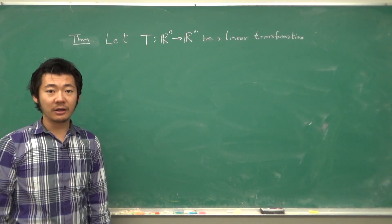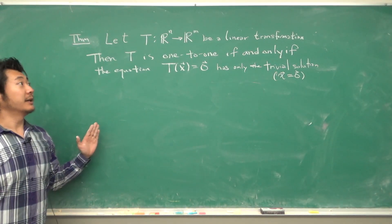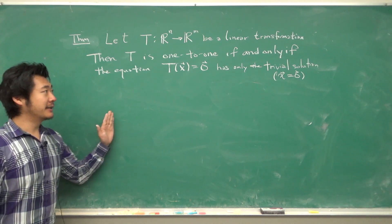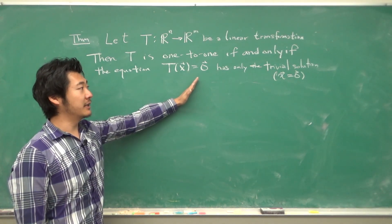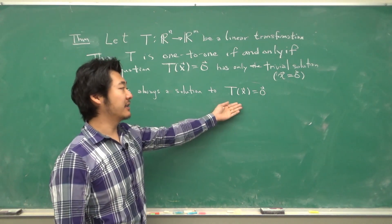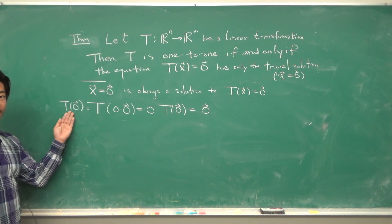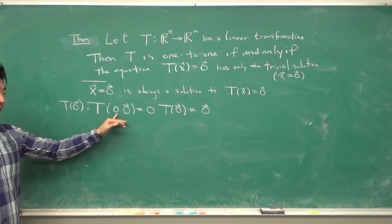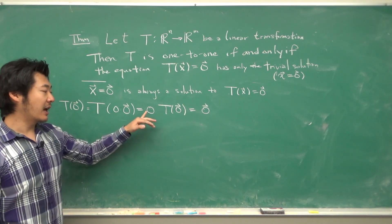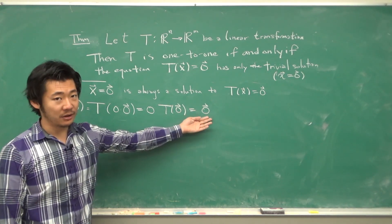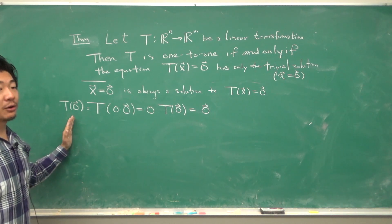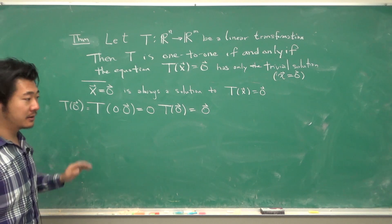How can we tell if a transformation is 1-to-1? There is a theorem: let T be a linear transformation from Rn to Rm. Then T is 1-to-1 if and only if the equation T(X) = 0 has only the trivial solution X = 0. Note that X = 0 is always a solution since T is linear: T(0) = T(0·0) = 0·T(0) = 0.